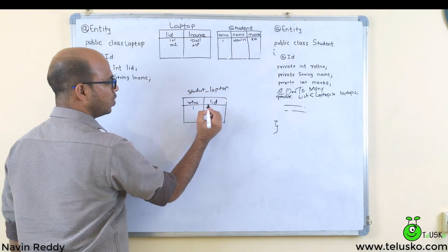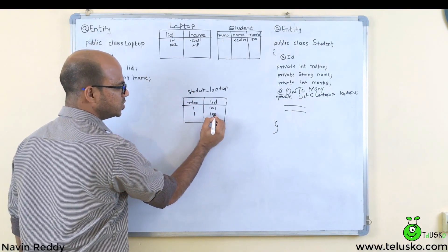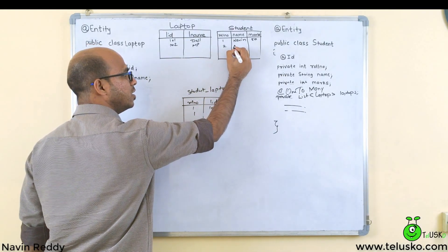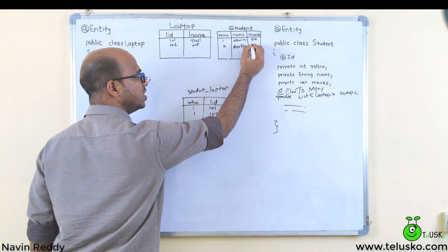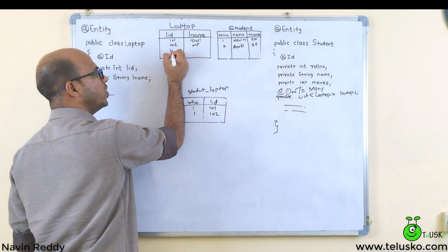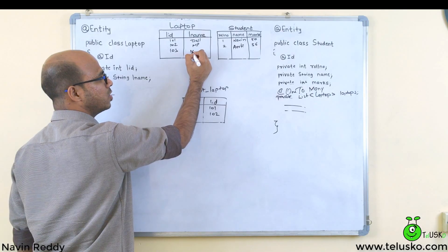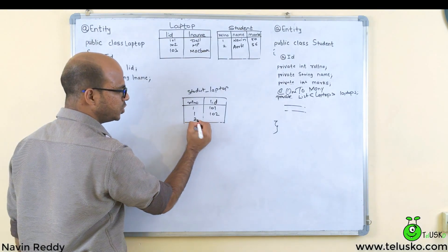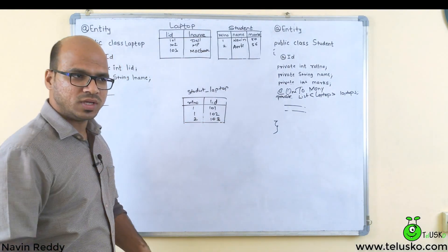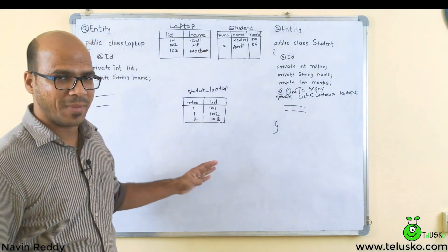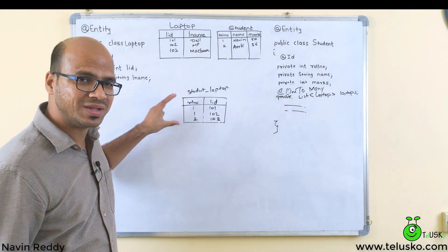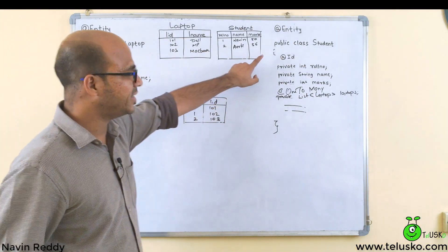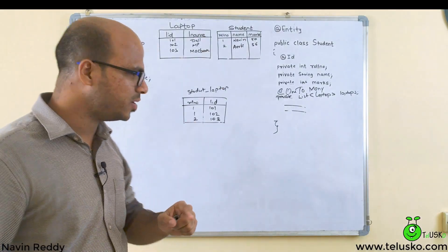The student_laptop mapping table has two columns: roll number and LID. For example, Naveen (roll 1) has laptops 101 and 102, so there are two rows: (1, 101) and (1, 102). Aarti (roll 2) has only MacBook (103), so there's one row: (2, 103). This separate table handles all the relationship entries.